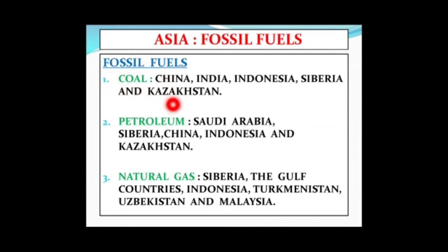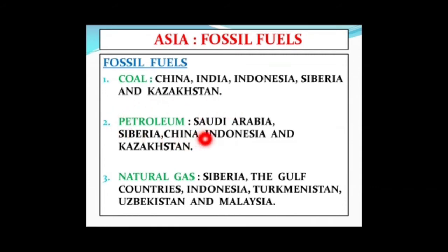Coal is mainly found in China, India, Indonesia, Siberia and Kazakhstan. Petroleum in Asia is found in Saudi Arabia, Siberia, China, Indonesia and Kazakhstan.